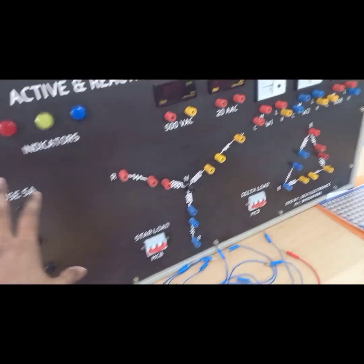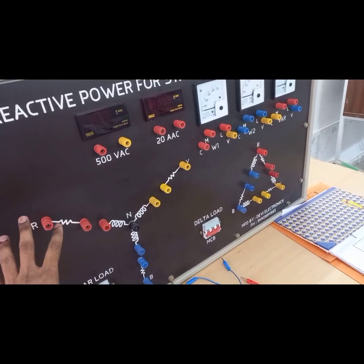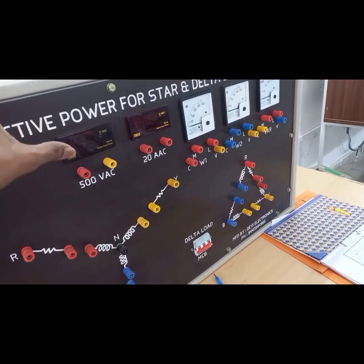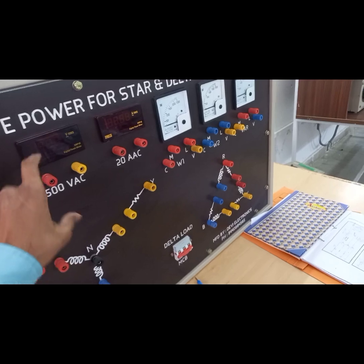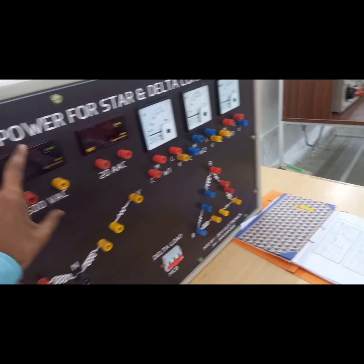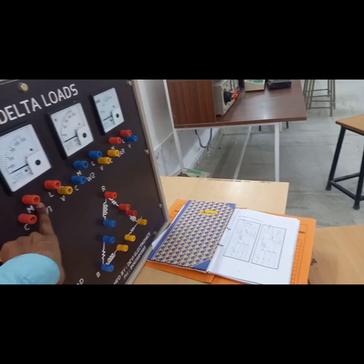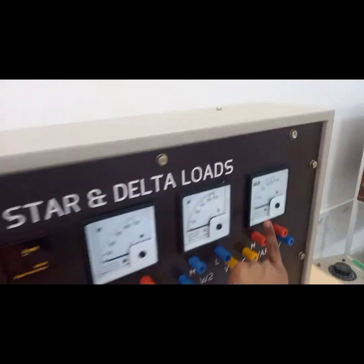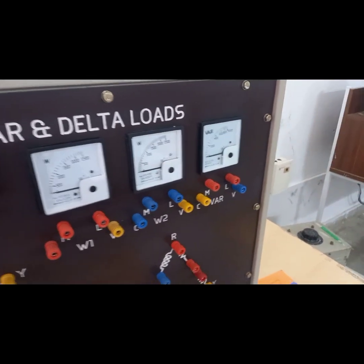All the measurements we need are available in the control panel only. Here we have a voltmeter, an ammeter, wattmeter 1, and wattmeter 2. For reactive power we are taking a VAR meter.